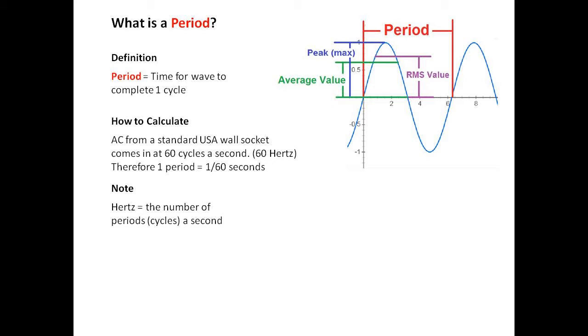Now how you calculate the period, for AC for example, for a standard USA wall socket, it comes out at 60 cycles a second or 60 hertz. Therefore one period equals 1 over 60 seconds, or one sixtieth of a second.